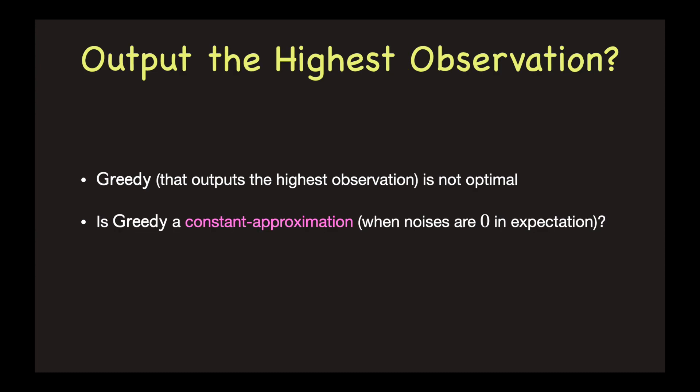Now that we know that Greedy is not always optimal, we naturally ask, is it approximately optimal? In particular, is it a constant approximation? After all, intuitively, Greedy might be a convincing strategy, since it chooses the value which in expectation is the highest. However, it turns out that it is not a constant approximation, even when there are only two values.